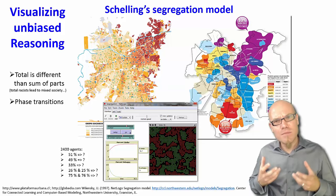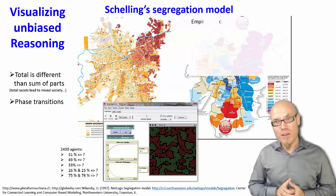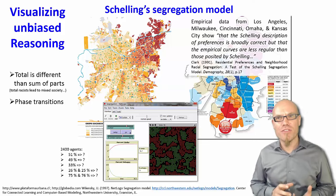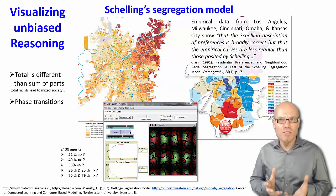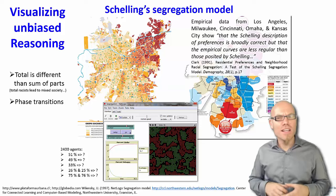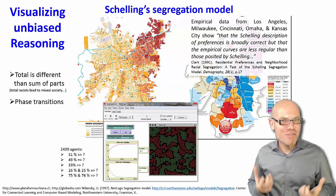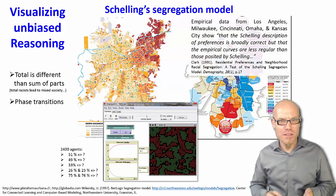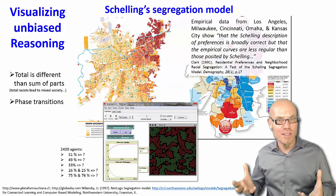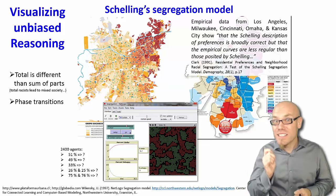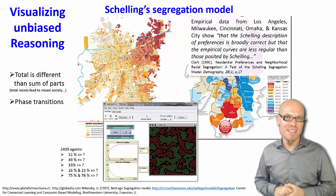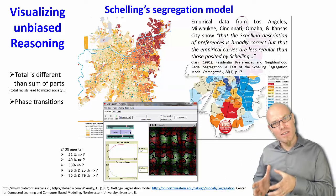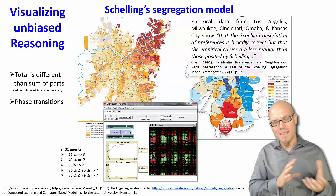Schelling's segregation model, as simplistic as it seems, it actually was proven to be empirically correct. Empirical data from Los Angeles, Milwaukee, Cincinnati, Omaha, and Kansas City show that the Schelling description of preferences is broadly correct, but the empirical curves are less regular than the curve suggested by a theoretical model. You can make the model as complex and as reality-truthful as you would like. Usually there are more than four neighbors that you're interested in. They're actually networks. Maybe it's the number of people in your expanded neighborhood. You can use the digital data footprint and make a model specific to cities, and then it becomes increasingly more complex. These models allow you to understand very simply what's the logic, and that was proven to be correct. Now you can go on and make it as sophisticated as you like.